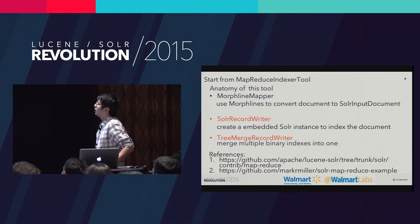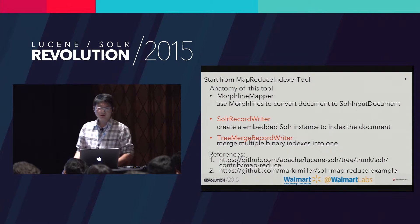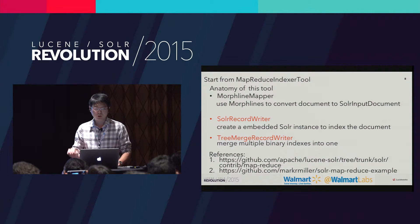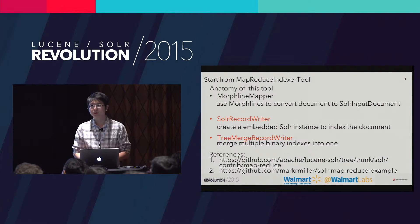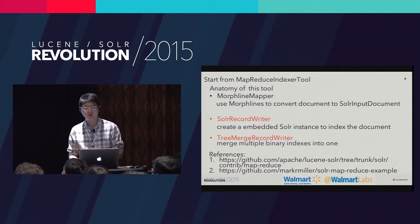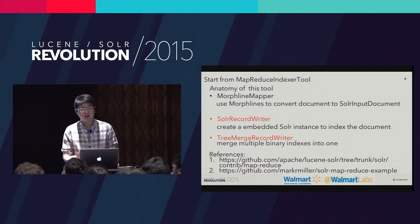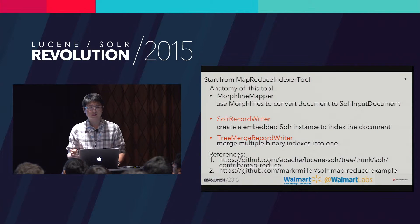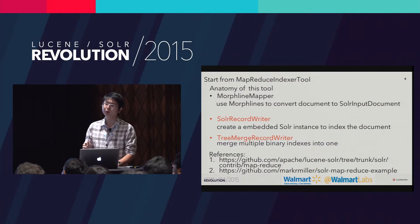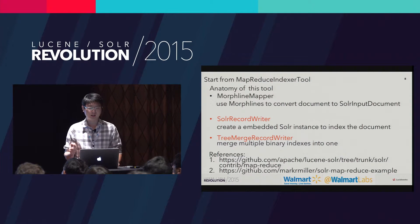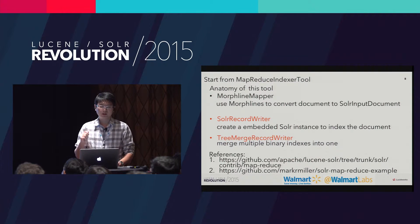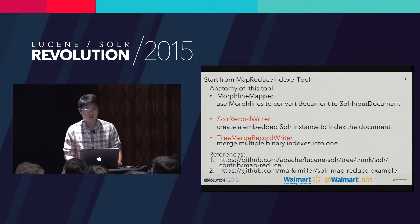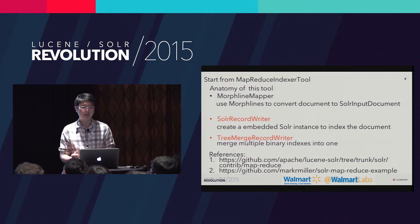Let's start from the MapReduce indexer tool. A close look at this tool reveals three core parts. The first is MorphlineMapper, which uses Morphline — a product of Cloudera — to convert documents to Solr input document format. Then there is the SolrRecordWriter, which creates an embedded Solr instance to index documents — that's the core and key part of the tool. Eventually, documents go to the TreeMergeRecordWriter, which merges multiple binary indexes into one.